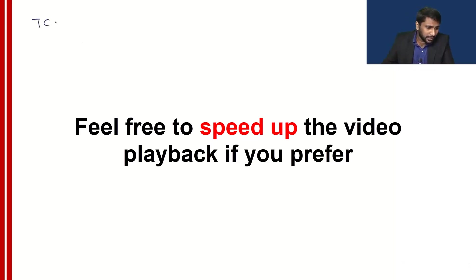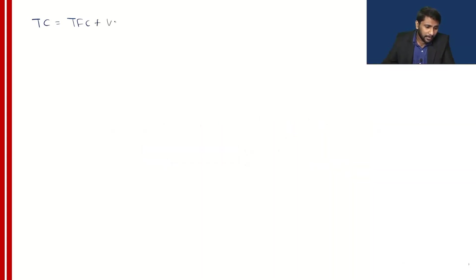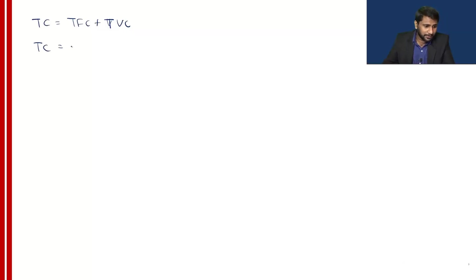The total cost equals total fixed cost plus total variable cost. I further elaborated this: total cost equals total fixed cost plus variable cost per unit multiplied by the number of units.